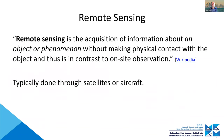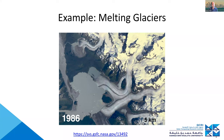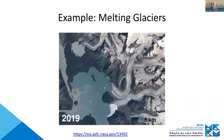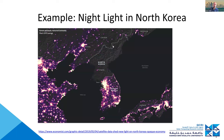I'll talk about a particular type of remote sensing — remote social sensing — but let's start with general remote sensing. Remote sensing is the acquisition of information about an object or phenomenon without making physical contact, in contrast to on-site observation. Typically it's done through satellites or aircraft: monitoring climate with satellite imagery showing glaciers melting, deforestation in the Amazon, or night lights used to show the lack of economic development in North Korea compared to South Korea.